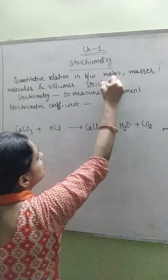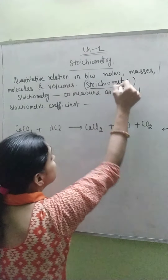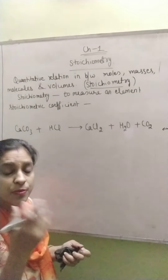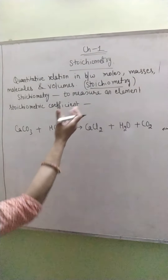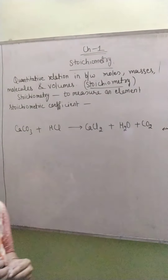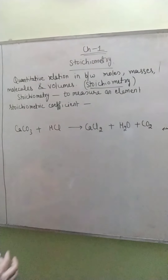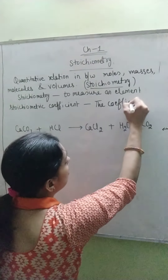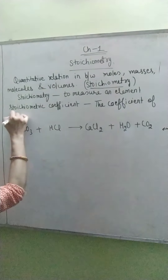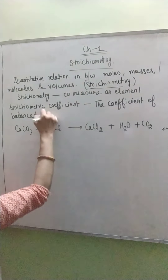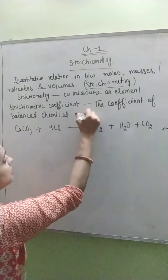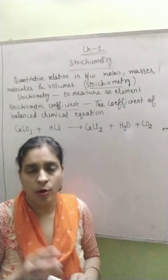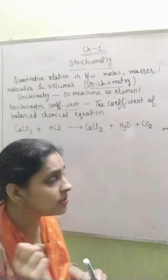This relationship that is formed in a balanced chemical equation in between the compounds — their moles, masses, volume, and molecular masses — what do we call it? We call it stoichiometric. And if we talk about the stoichiometric coefficient, the coefficient of a balanced chemical equation is called the stoichiometric coefficient. Now I will explain how we can understand this.